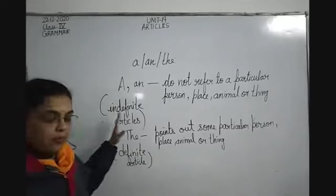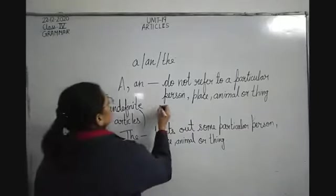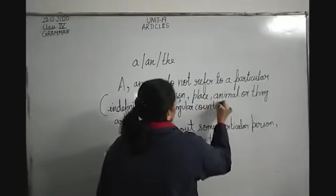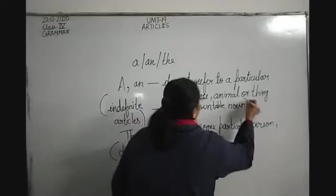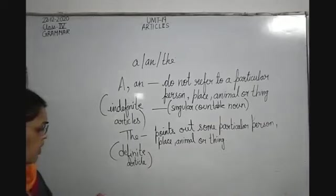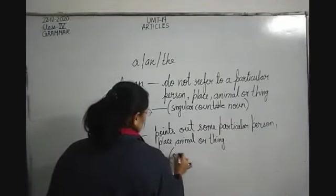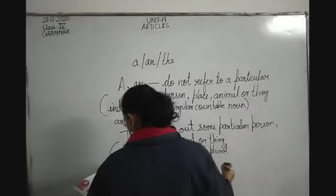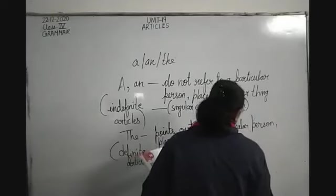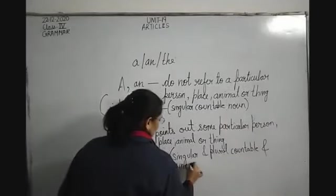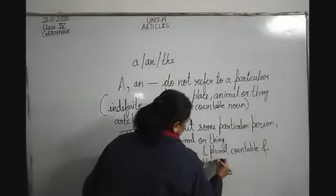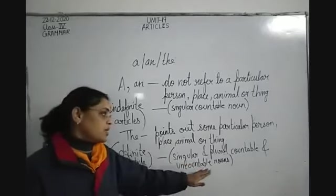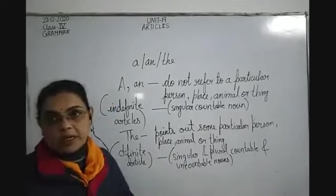You need to keep in mind that A and AN are used only with singular countable nouns. Whereas THE is used with both singular and plural, countable and uncountable nouns. A and AN refer to only one thing in general, whereas THE can be used with any noun.